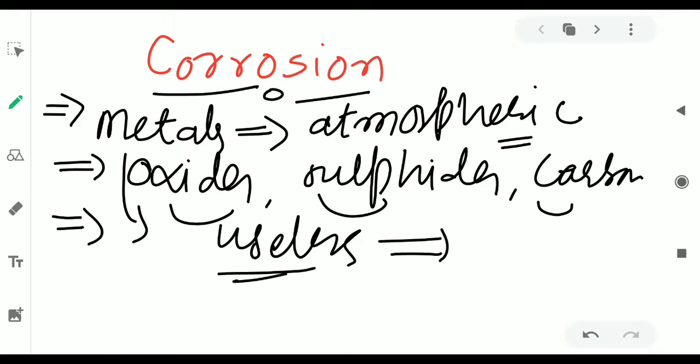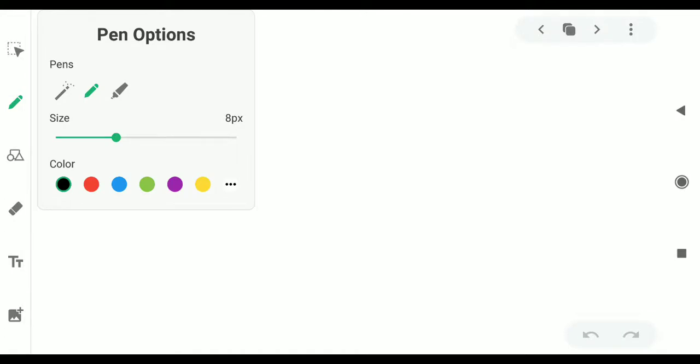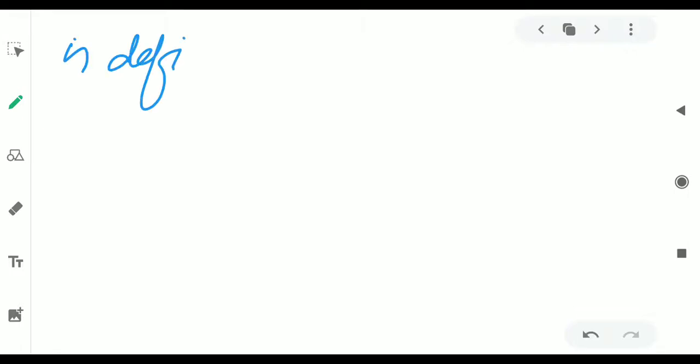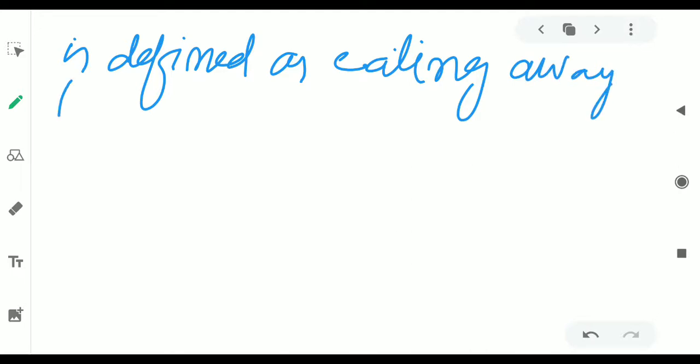It is destroyed, we can say. And this process is called as corrosion. So you can write down in few words what is corrosion. Corrosion is defined as eating away or destruction of metals by the attack of atmosphere.